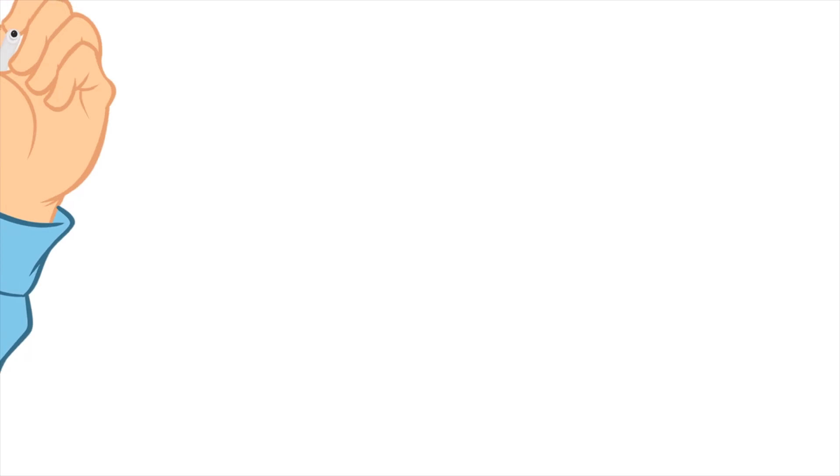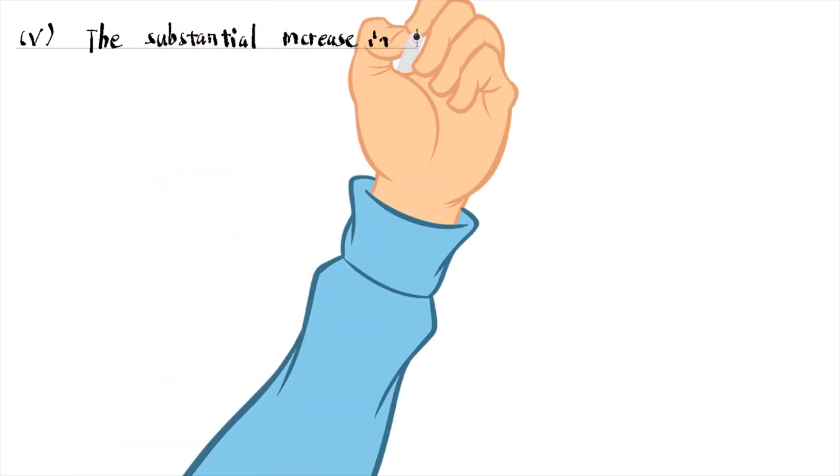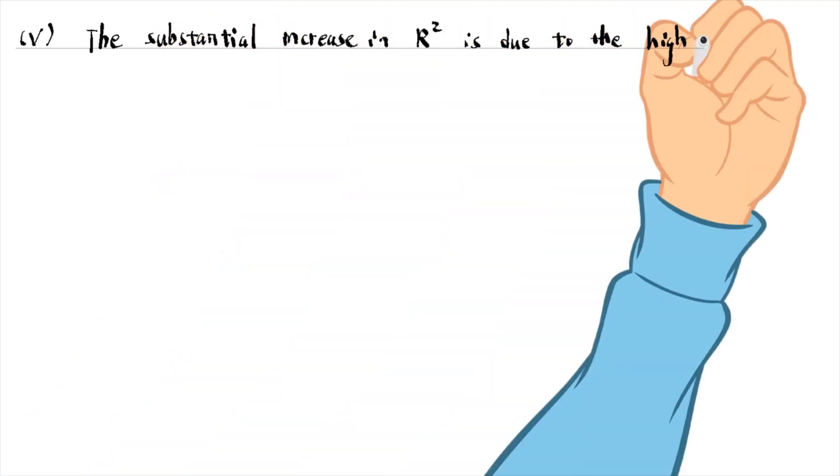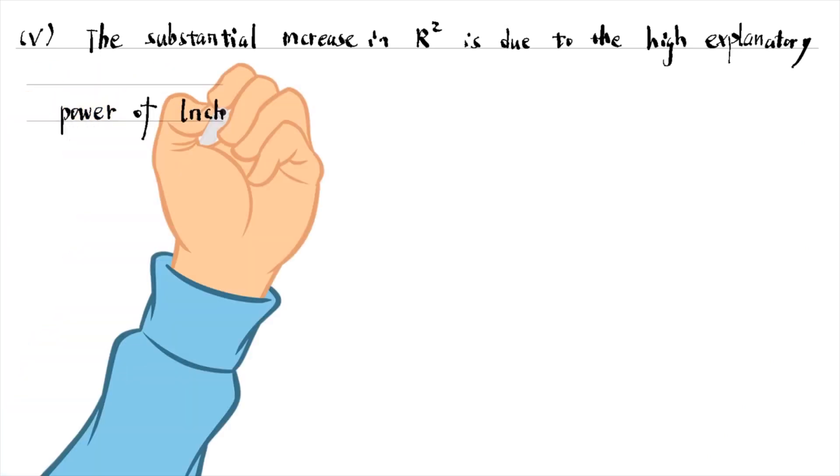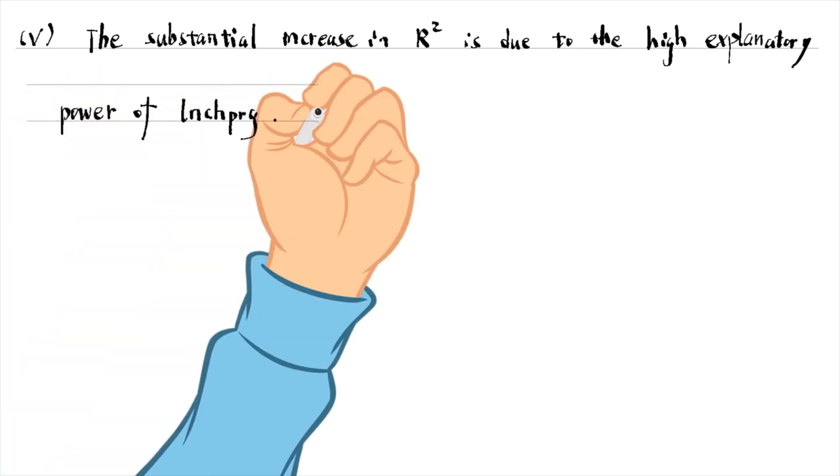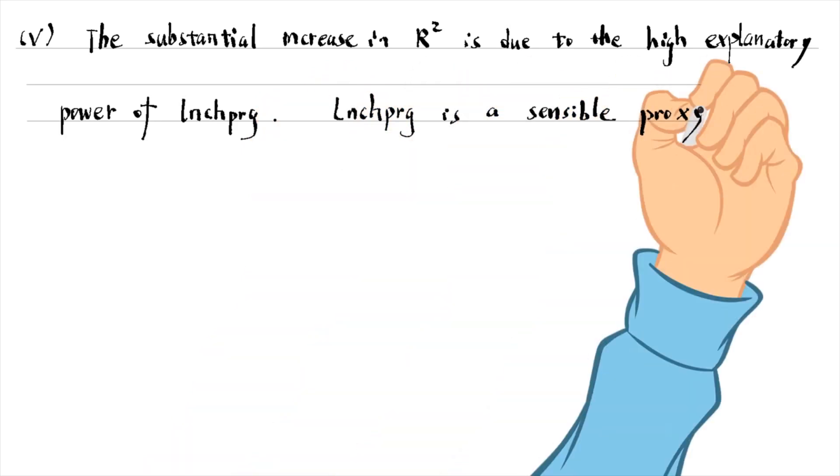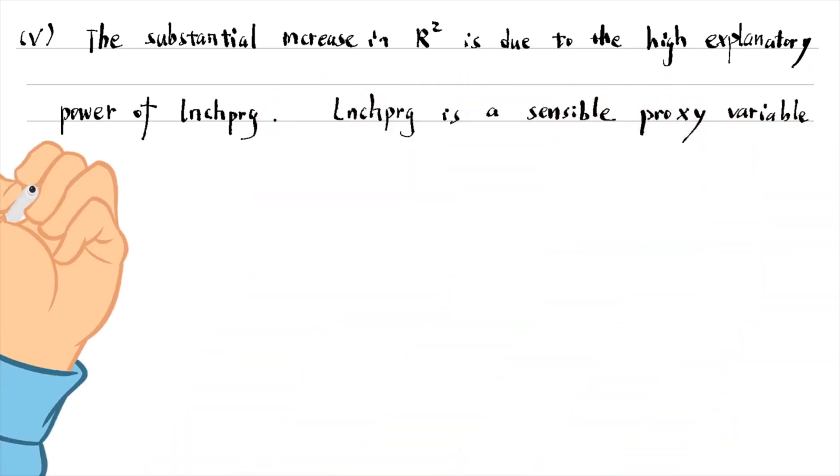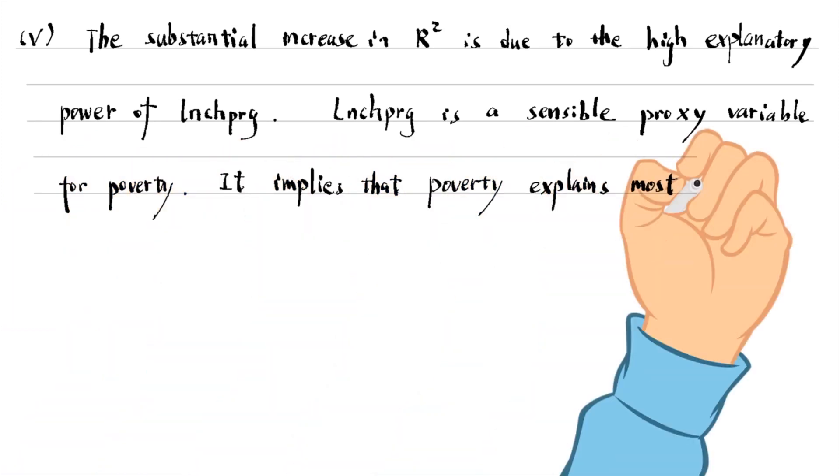For the last part, the R-squared rises from 0.03 to 0.19 after adding the lunch program variable. The substantial increase in R-squared is due to the high explanatory power of the lunch program variable. The school lunch program is a sensible proxy variable for poverty. It implies that poverty explains most variation in the outcome variable, math pass rate.